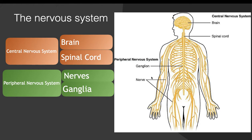Most nerves originate at the spinal cord — they start at the spinal cord and end at some organ. These nerves are called spinal nerves. Some nerves originate at the brain, and they are called cranial nerves. Most nerves are spinal nerves.